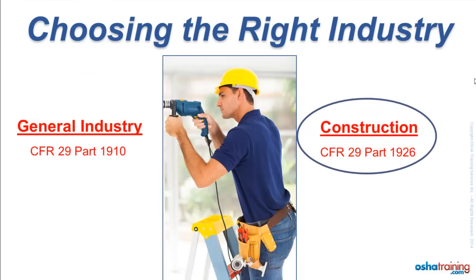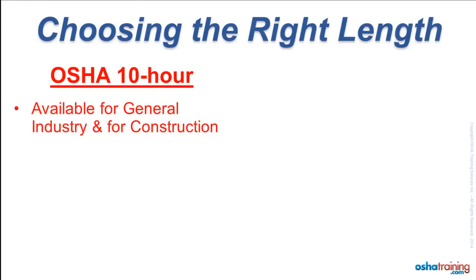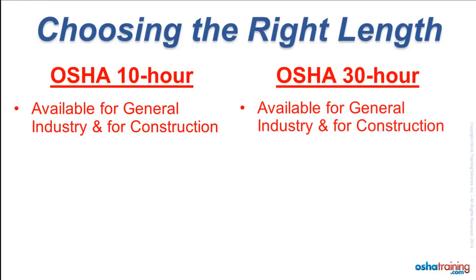If you need an OSHA training course because it is a stipulation of a current or prospective employer or customer, make sure to check with them first to see which version of the training course they require. There are a total of four OSHA outreach training courses available through our company: the OSHA 10-hour courses for general industry and for construction, and the OSHA 30-hour courses for general industry and construction.